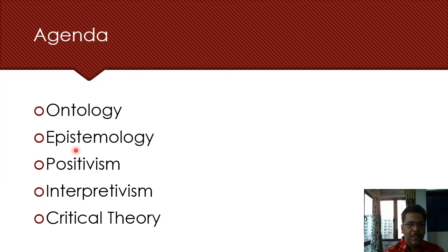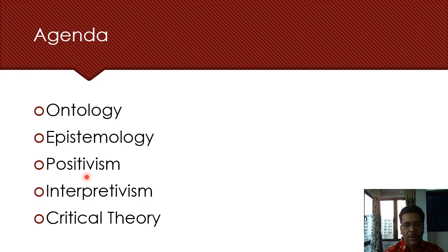The first thing that we will talk about is ontology. These terms are very familiar to many of us but we will try and demystify this. Then epistemology, and then the three different research methodologies: positivist social science, interpretivist social science, and critical social science. So let's begin the discussion with ontology first.